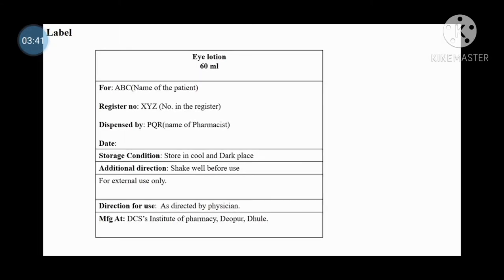Then Label of this eye lotion. Eye lotion 60 ml. For in that name of patient, register number that is number in the register, dispensed by that is name of pharmacist. Date is nothing but date of manufacturing.